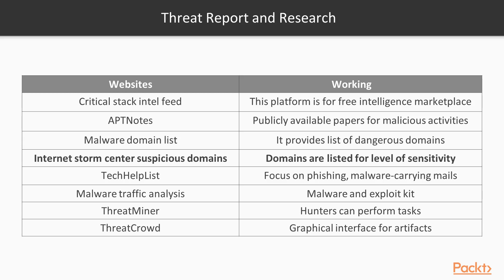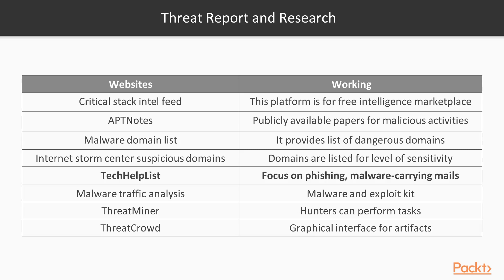Internet Storm Center Suspicious Domains lists domains with their level of sensitivity, indicating whether a domain is safe or not. Tech Help List focuses on phishing and malware-carrying emails — it can tell you if a website is using phishing or if emails are carrying malware. Malware Traffic Analysis provides information about malware as well as exploit kits available on the internet.